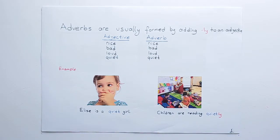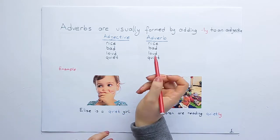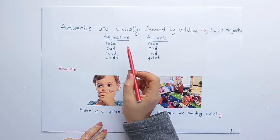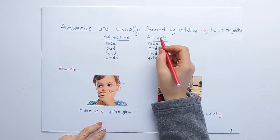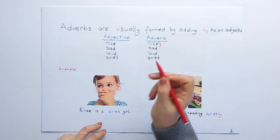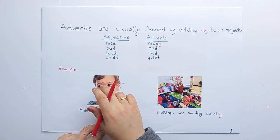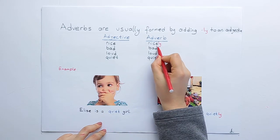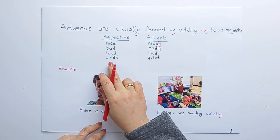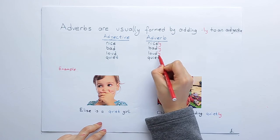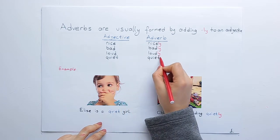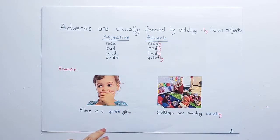Adverbs are usually formed by adding -ly to an adjective. For example: nice → nicely, bad → badly, loud → loudly, quiet → quietly.